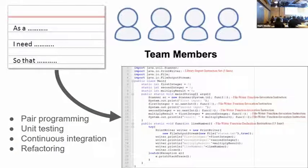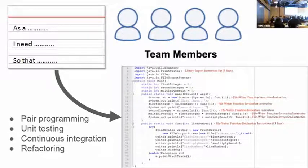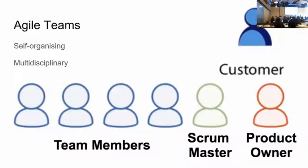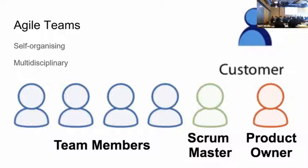Team members are the people who turn user stories into code, using technical practices like pair programming, unit testing, continuous integration, and refactoring. And of course, we can't forget the customer — the source of truth for all requirements. They have deep knowledge of their business domain, and the assumption is that they're always available to the agile team to have conversations with developers during development. It's a big commitment. The customer is not necessarily the end user — they can be business representatives who understand the requirements and what needs to be prioritized.